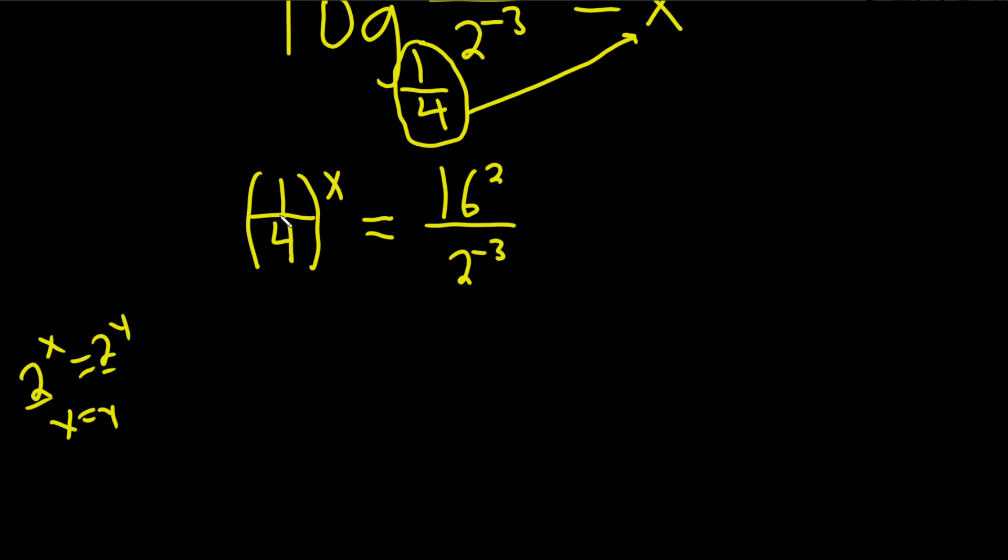So let's start by dealing with the 1 fourth. This is really 1 over 2 squared. Okay, and then over here the 16 is really 2 to the 4th. So this is 2 to the 4th squared, and then over 2 to the negative 3.